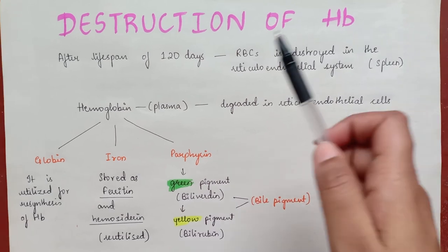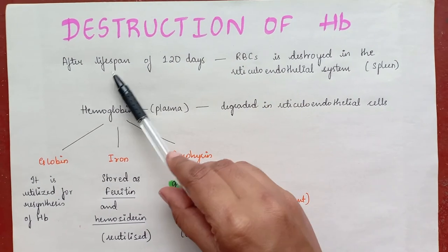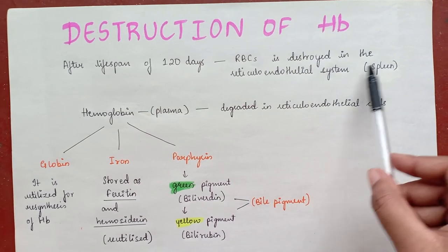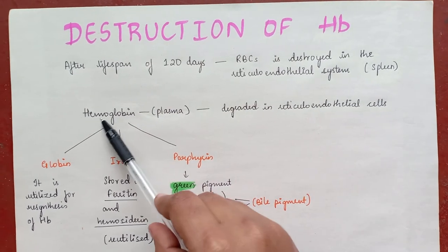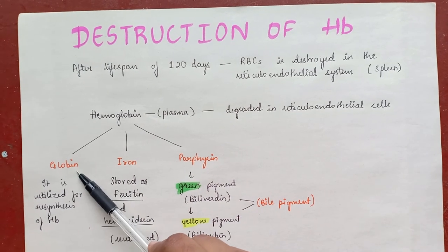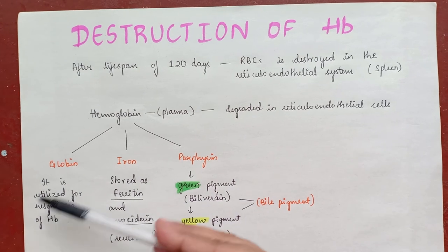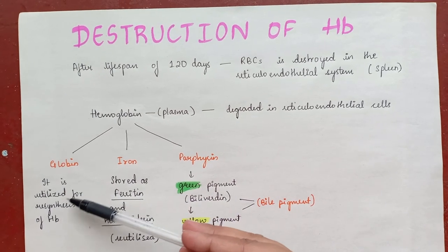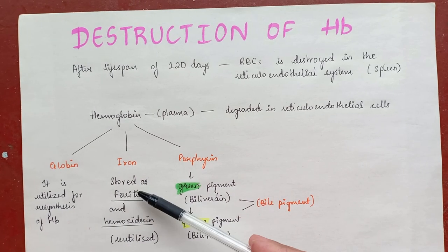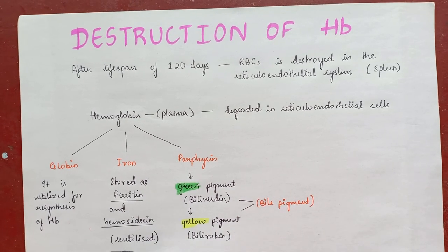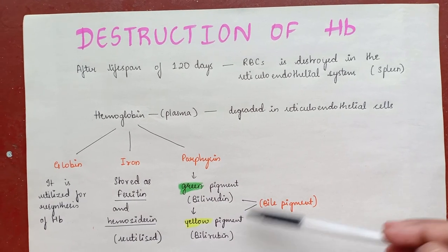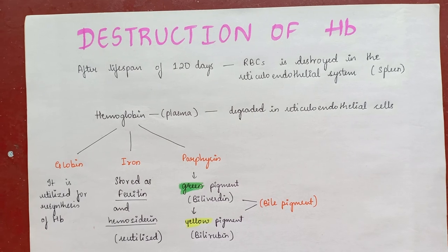Destruction of hemoglobin: after a lifespan of 120 days, the RBC is destroyed in the reticuloendothelial system, particularly in the spleen, and hemoglobin is released into plasma. Hemoglobin is degraded and split into globin, iron, and porphyrin. Globin is utilized for resynthesis of hemoglobin. Iron is stored as ferritin and hemosiderin and is reutilized. Porphyrin is converted into green pigment biliverdin and yellow pigment bilirubin.